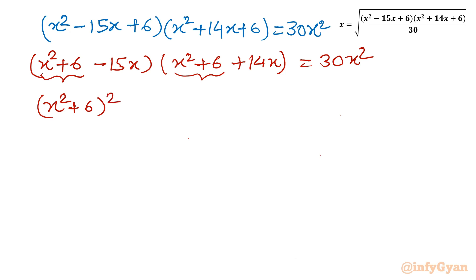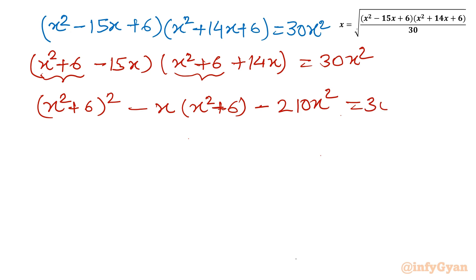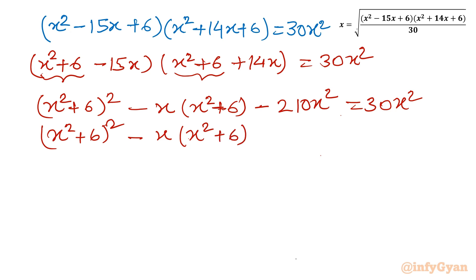Expanding: (x² + 6)² then cross terms 14x − 15x = −x times (x² + 6), and the product of −15x and +14x gives −210x². So the equation becomes: (x² + 6)² − x(x² + 6) − 210x² = 30x², which simplifies to (x² + 6)² − x(x² + 6) − 240x² = 0.